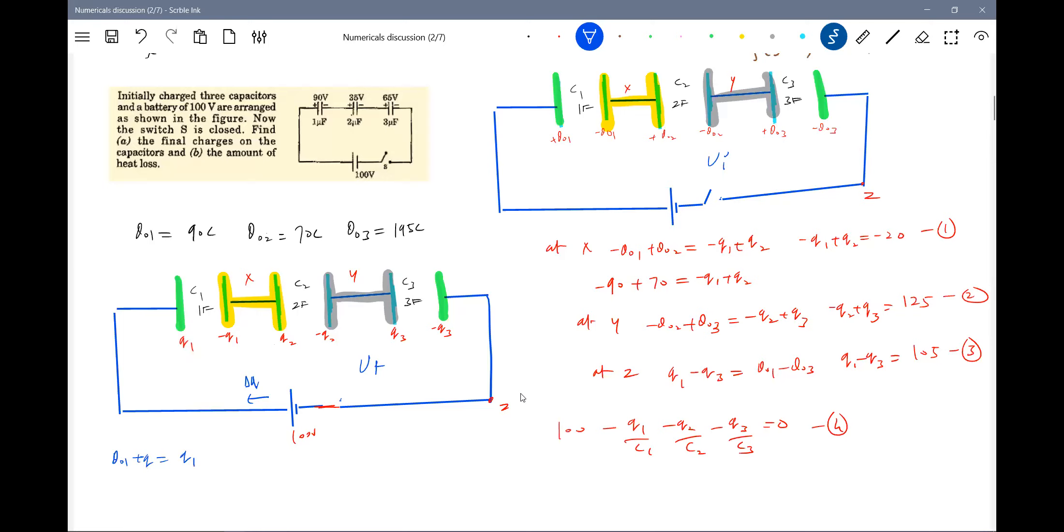So work done by the cell. So what is our final UI plus work done by the cell Delta Q into this will write E. Into E should be equal to UF plus E generated. I think, can you remember this conservation of energy principle? This is the electrostatic potential energy. This is the work done by cell. This is the final electrostatic potential. This is the E generated in circuit. Very, very generalized one.